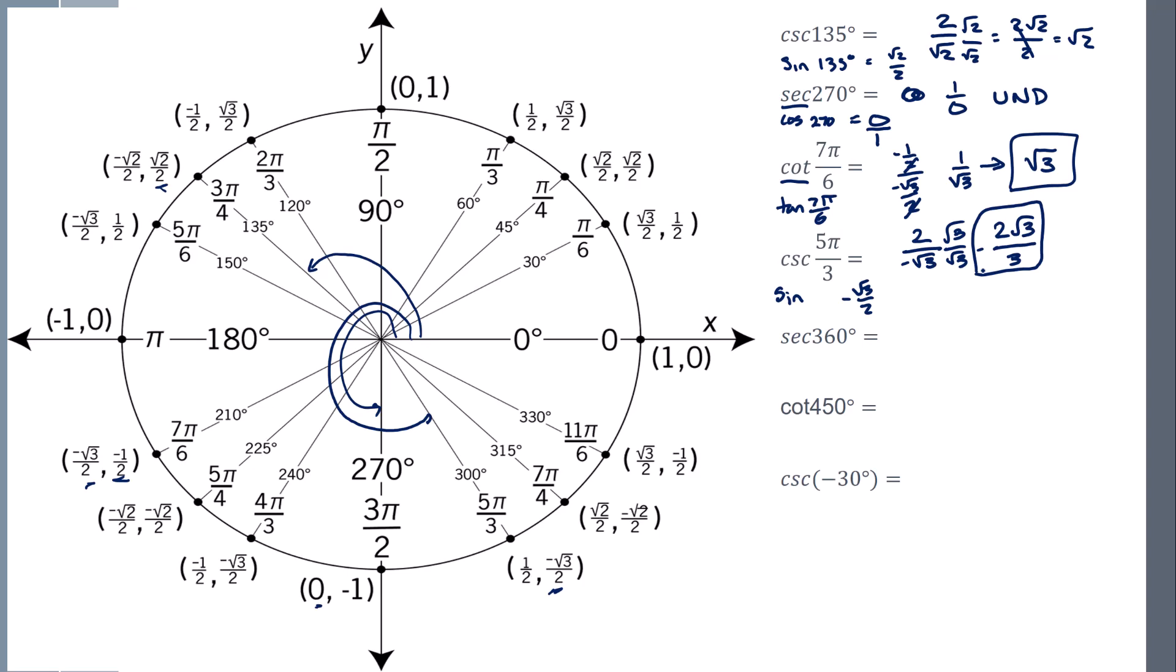Same idea when it comes to keep rotating and negative rotation. All of it doesn't change. You just find the sine, cosine, or tangent value, and then you flip it for its specific reciprocal.